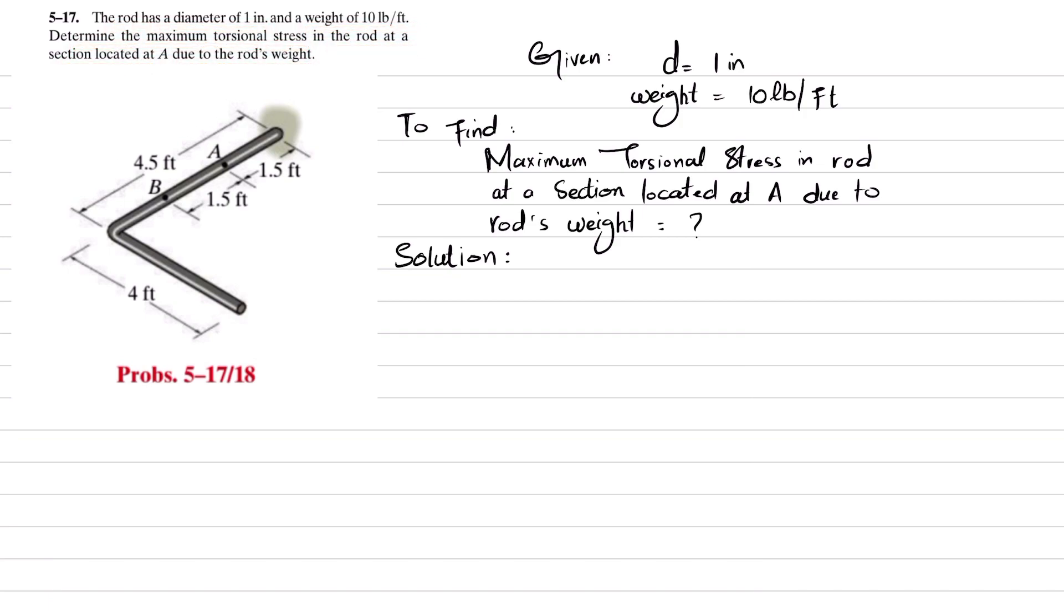You can see this is the rod, and all the lengths have been mentioned - total is 4.5 and 4 feet. What you have to find is the maximum torsional stress at this point A due to the weight of the rod.